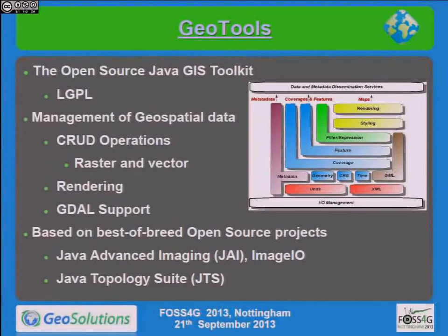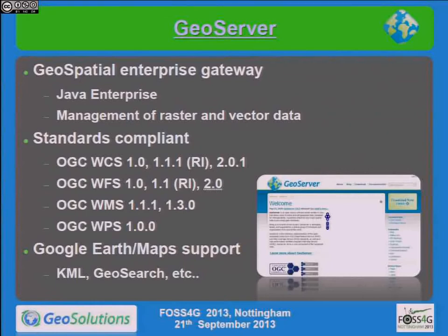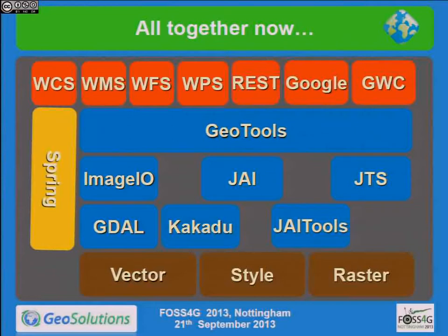On top of all this, we have GeoTools, the base library inside GeoServer for everything from data access to rendering. It contains the internal model on which GeoServer works — features for vector data and coverages for raster data. And on top of GeoTools, we have GeoServer. JAI and JAI Tools handle operations on rasters, ImageIO and ImageIOx handle input formats, GeoTools adds georeferencing, and GeoServer uses them all.